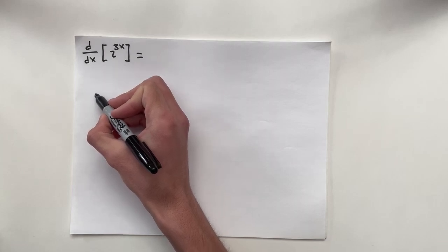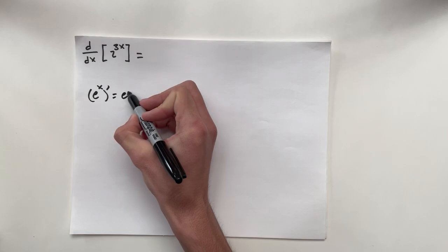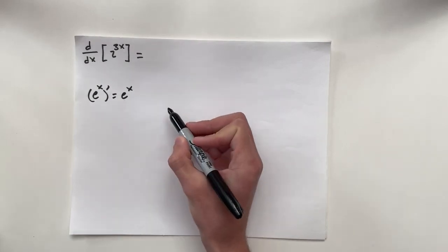So we know that the derivative of e to the x is simply e to the x. That's just the way that it works.